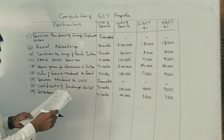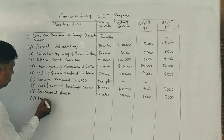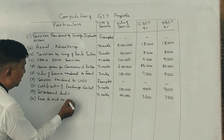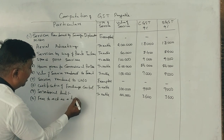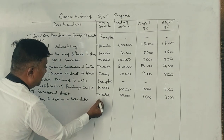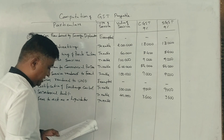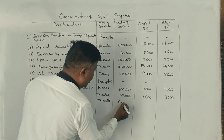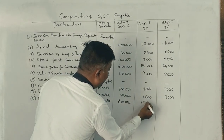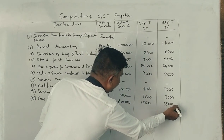Fees to act as a liquidator — this is also a taxable service. Thereby, on 2 lakh rupees, 18,000 CGST and 18,000 SGST is taxable.